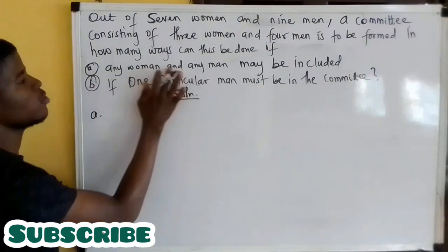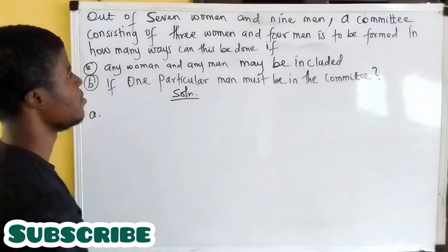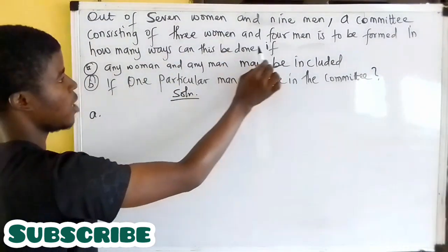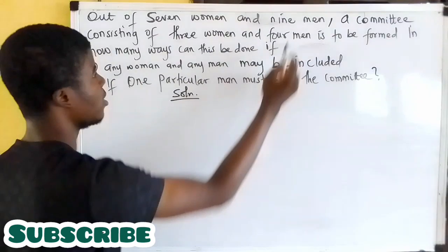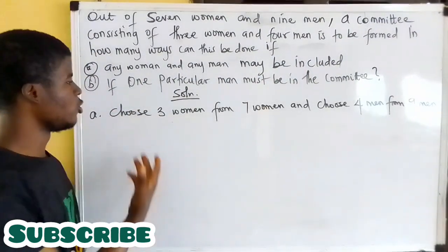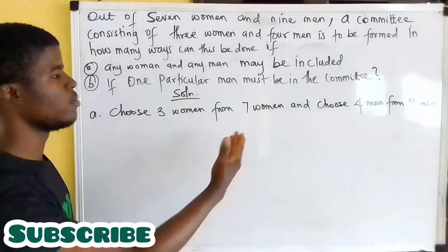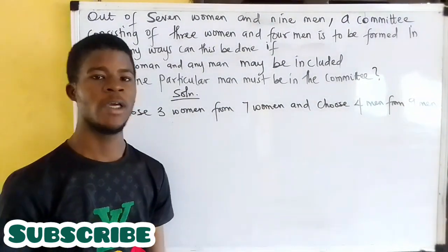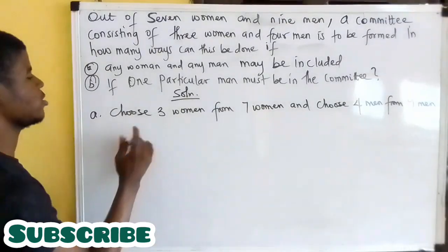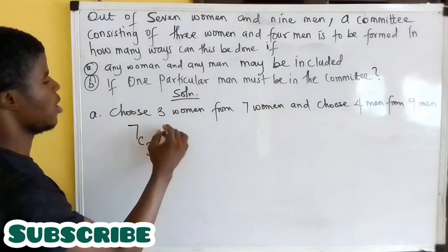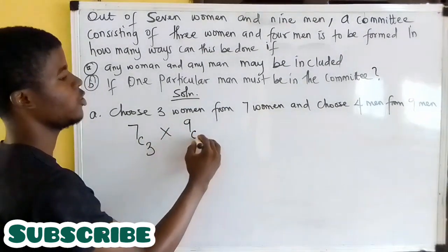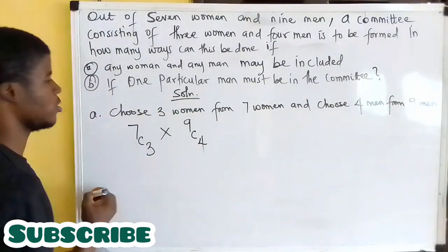For this first part, if any woman and any man may be included, it means we are going to choose three women from seven women and choose four men from nine men. Choosing three women from seven women is seven combination three, and choosing four men from nine men is nine combination four.